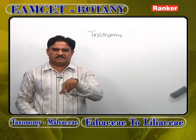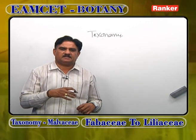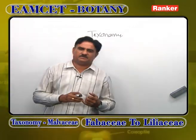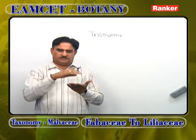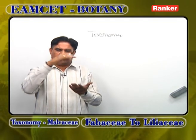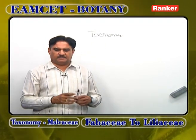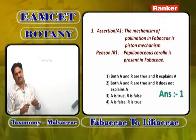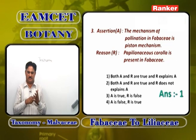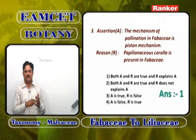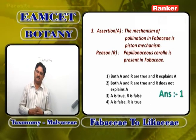The stigma collects pollen from the insect's body. The insect goes deep into the flower because nectary glands are present at the base of the ovary in Fabaceae. After taking nectar, the insect leaves and everything returns to normal. This upward-downward movement of androecium and gynoecium is called piston mechanism. Both A and R are correct, and R is the correct explanation of A. Answer is 1.